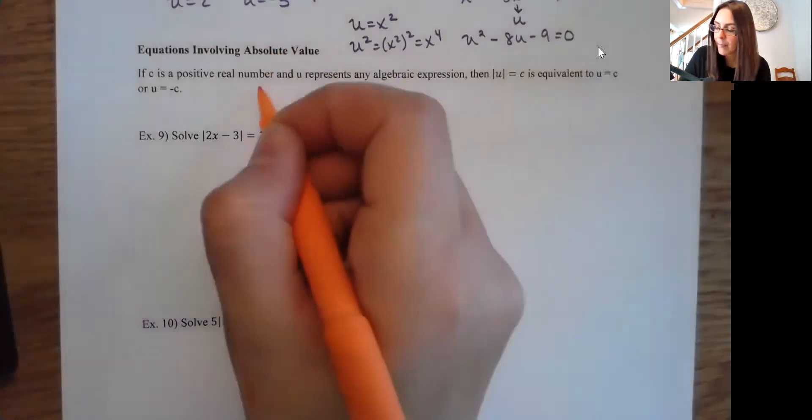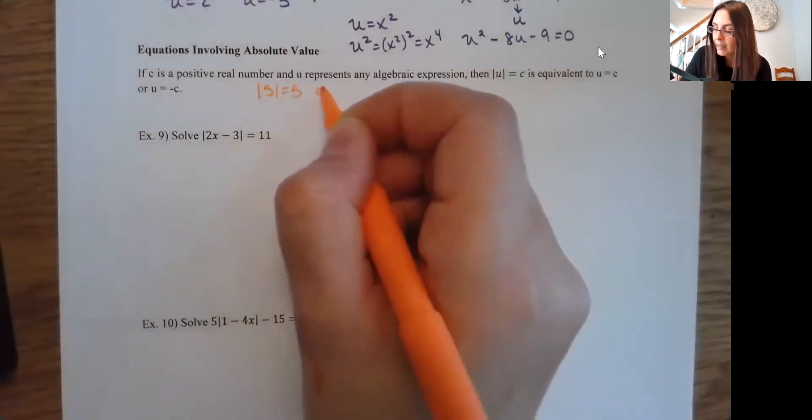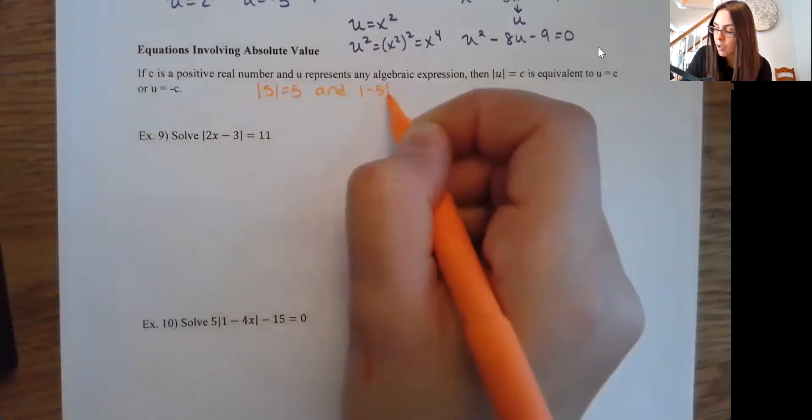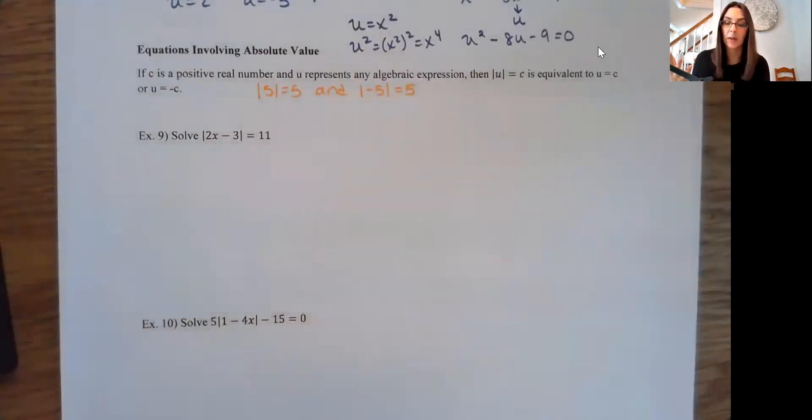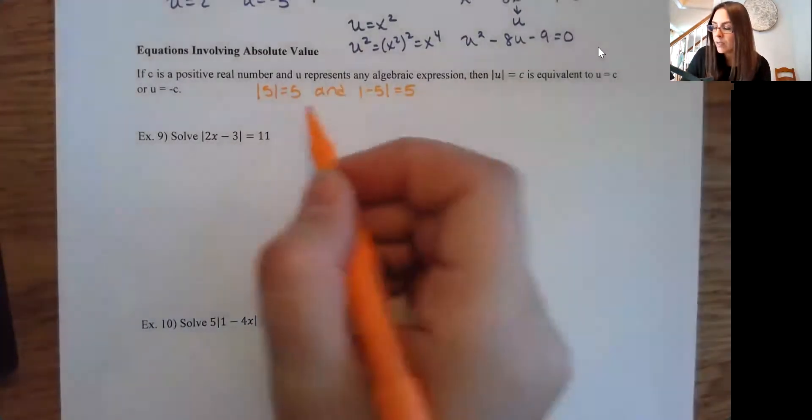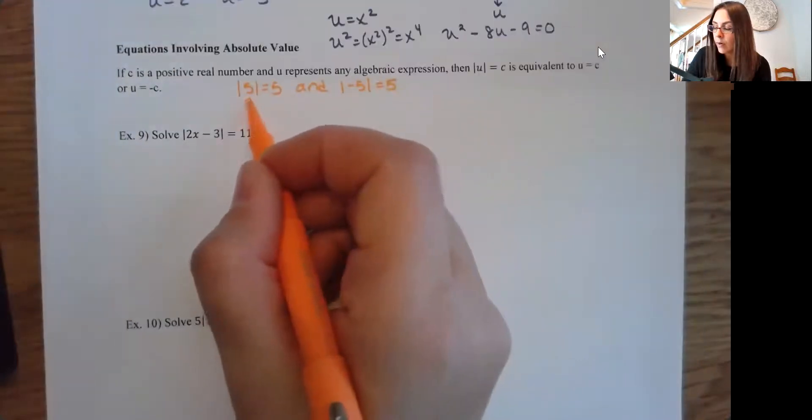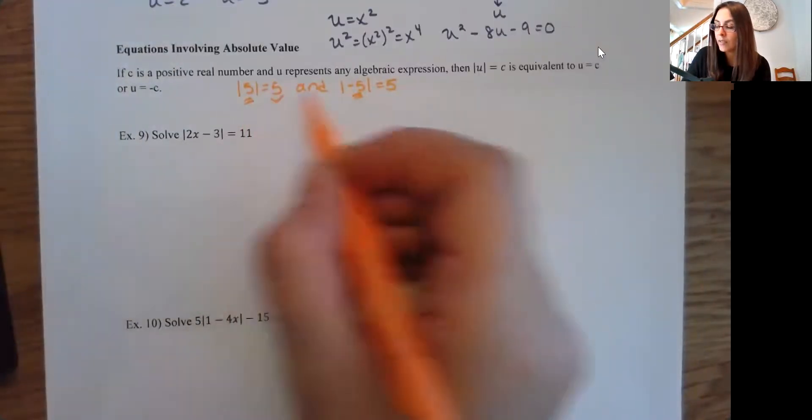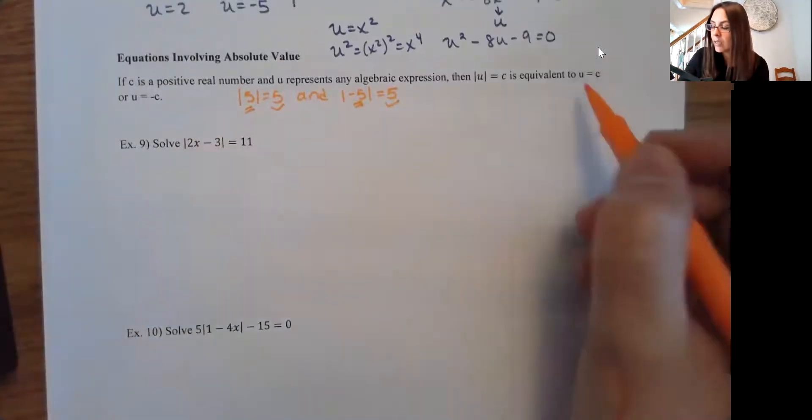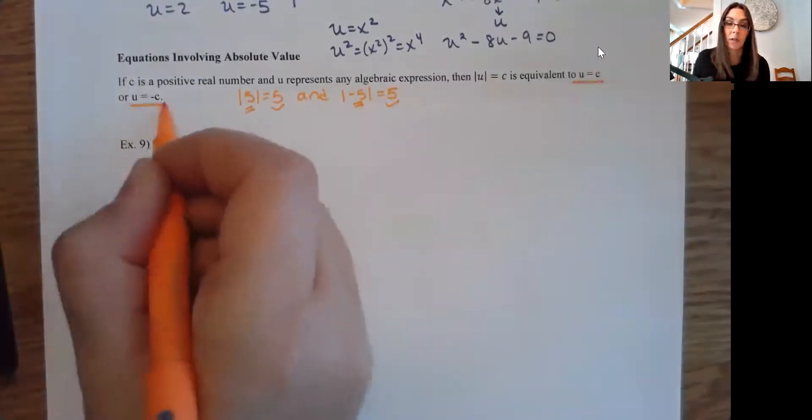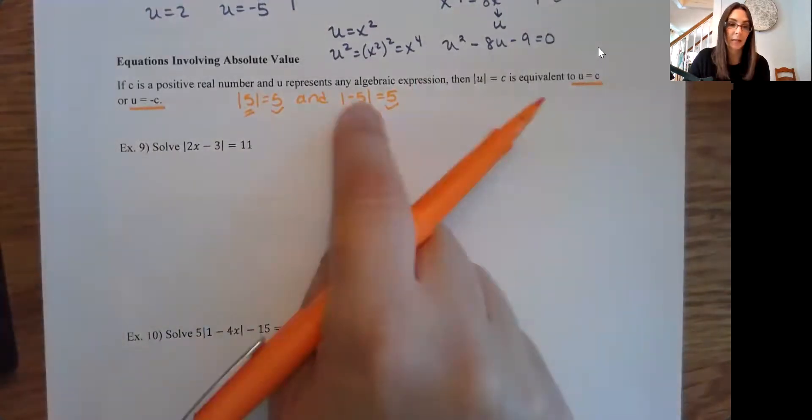So think back to absolute values. For instance, the absolute value of 5 is 5, and the absolute value of negative 5 is also 5. It's a distance from 0. So what happens is two different values, 5 or negative 5, give you that same result. So when we solve absolute value equations, you're going to see that we're going to set it to two different versions so that we can get both of those possibilities.